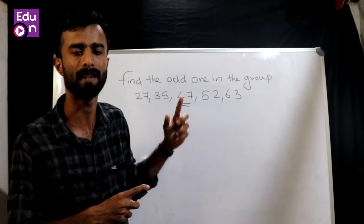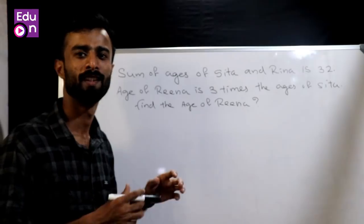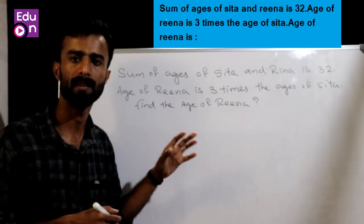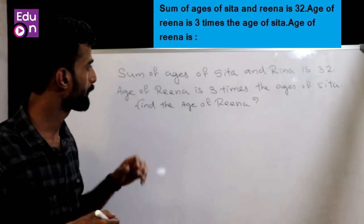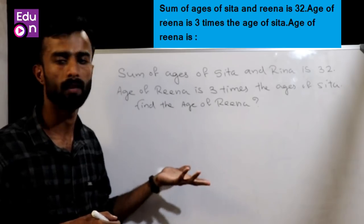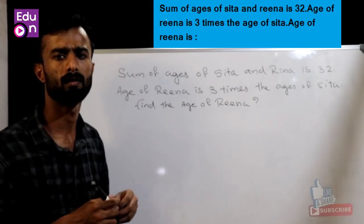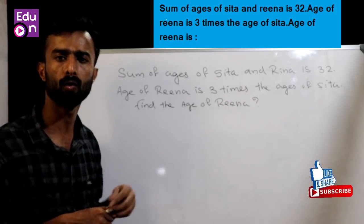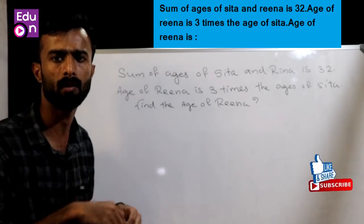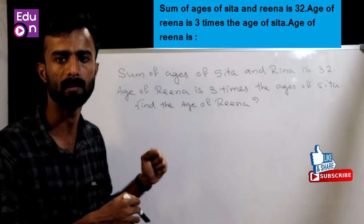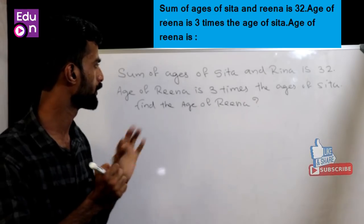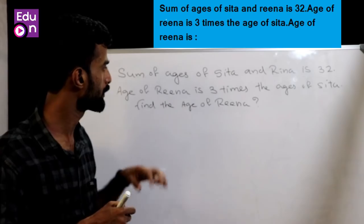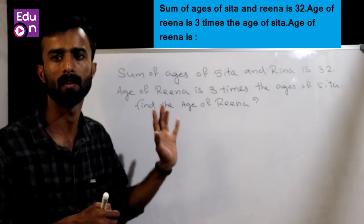So we will move to the next question. Sum of ages of Siddha and Rina is 32. Age of Rina is 3 times the age of Siddha. Find the age of Rina. In this question we have a sum of values and we have a ratio of ages — another topic involving ratios.